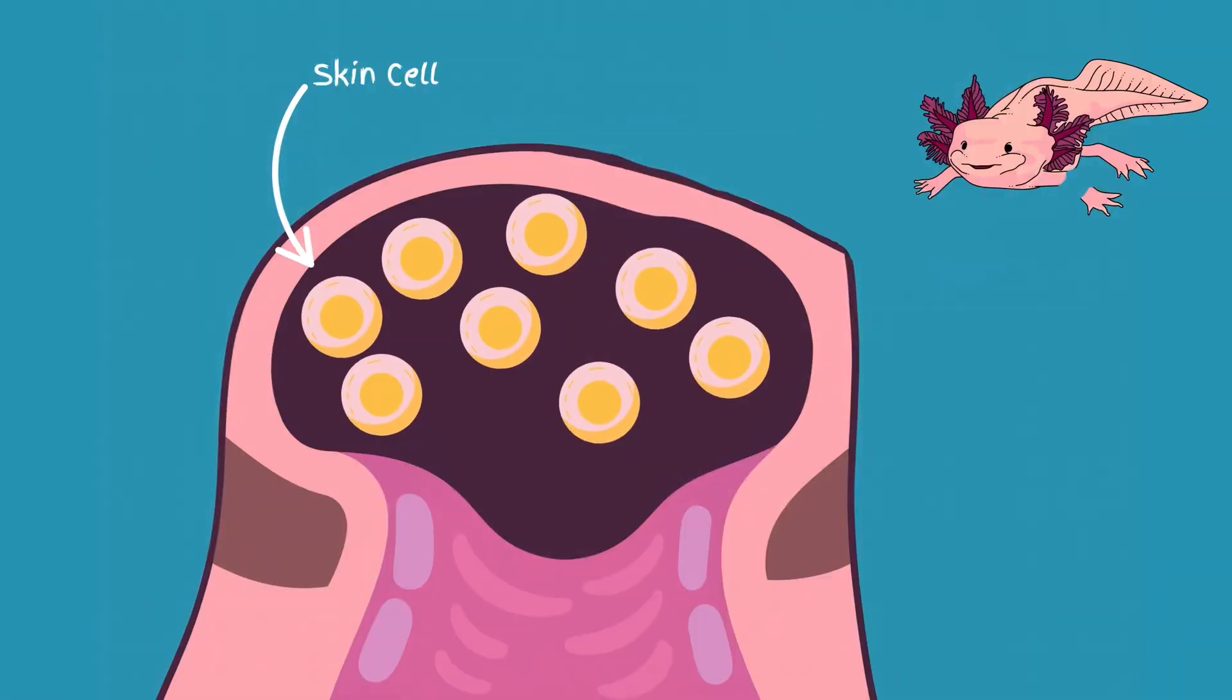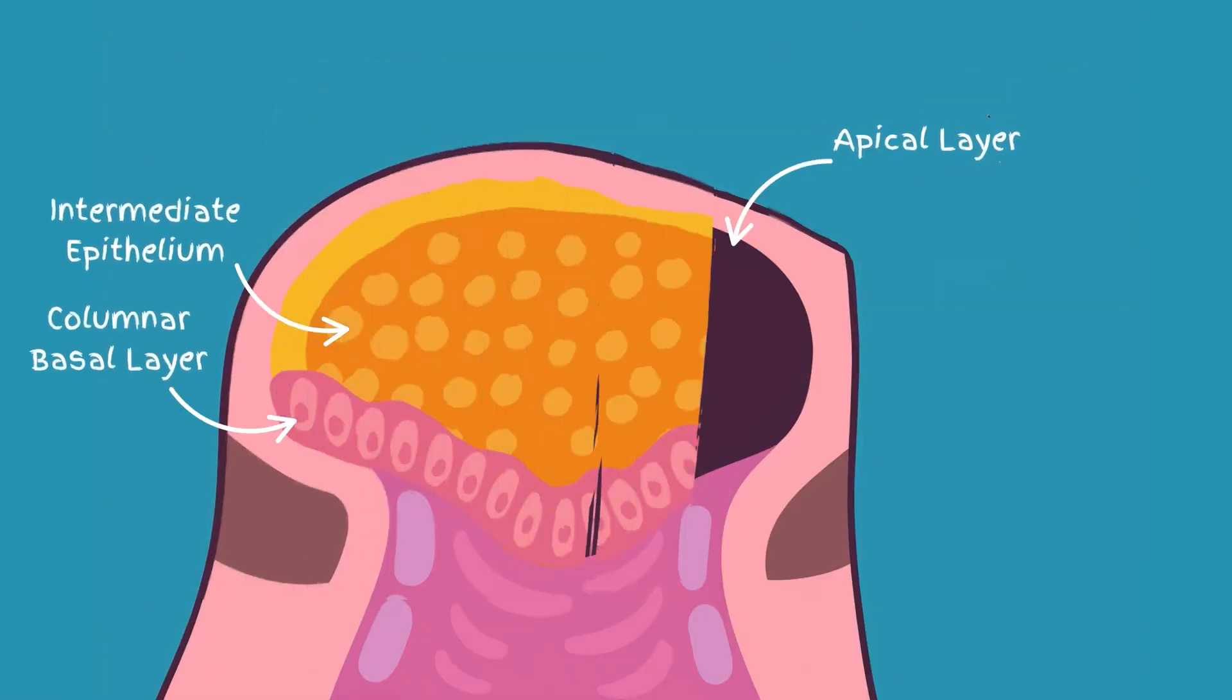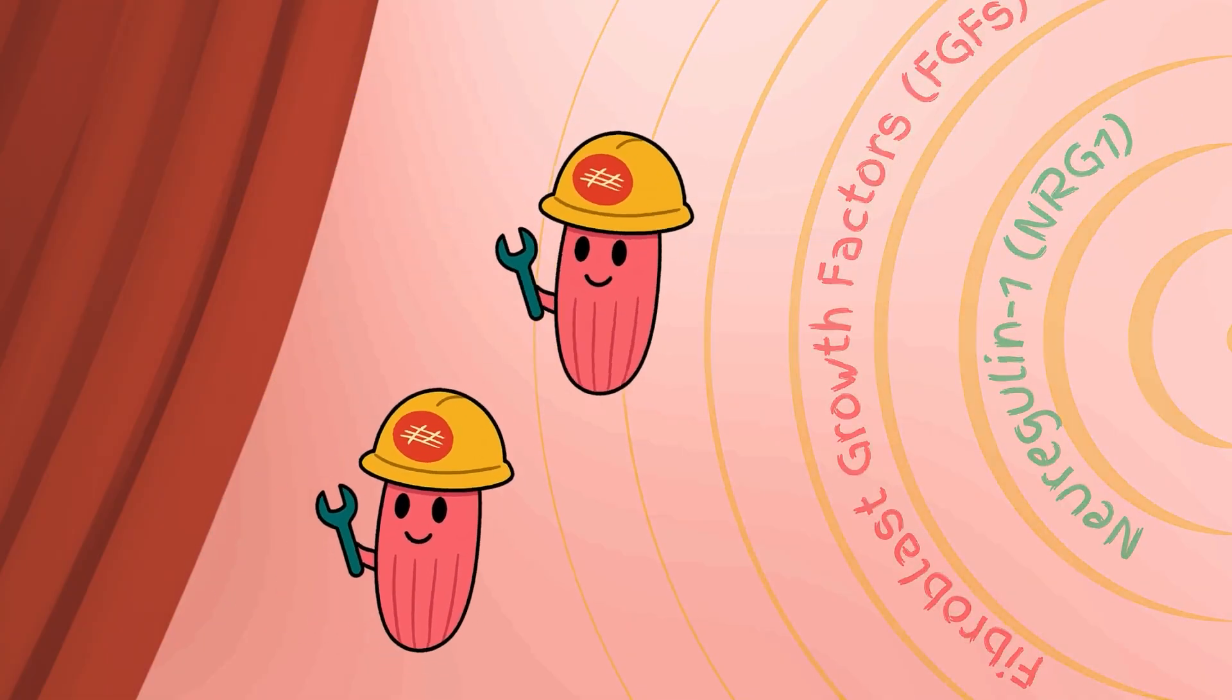When an axolotl loses a limb, skin cells seal the wound, creating a wound epidermis. Beneath, the injured nerves release signals telling mature cells near the stump it's time to rewind.